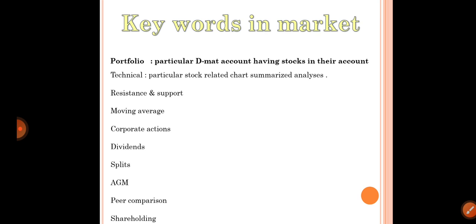Stock splits: when a stock has a very high price — like 50,000, 80,000, or 90,000 rupees — most investors cannot buy it. The company decides to split the price, bringing it down from, say, 60,000–70,000 to around 2,000 rupees, making it accessible to traders. AGM means Annual General Meeting — every year companies project their results, like Reliance's recent AGM.